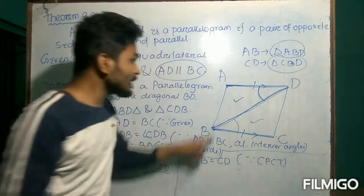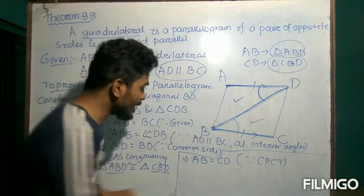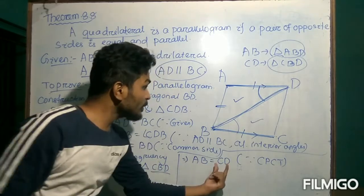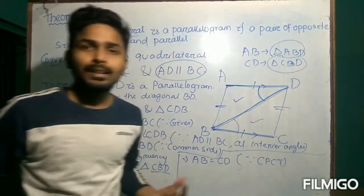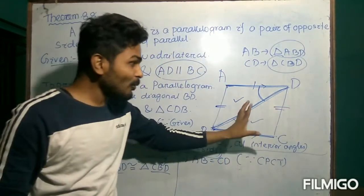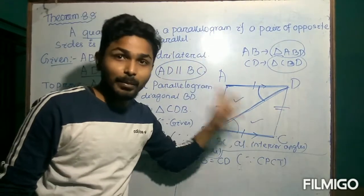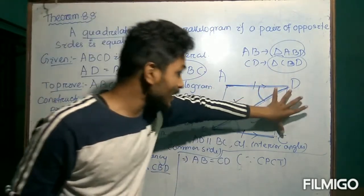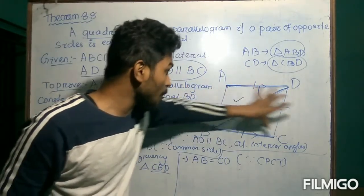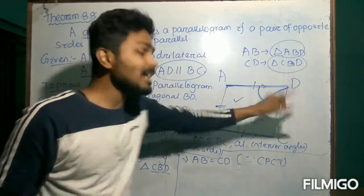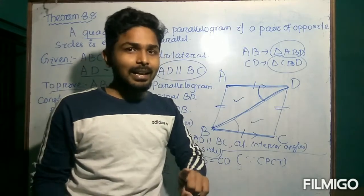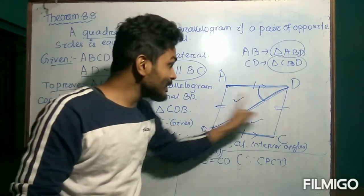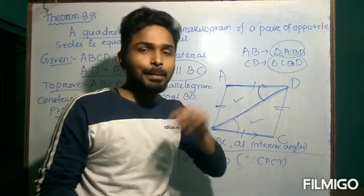We have proved that side AB is equal to side CD. So we have confirmed the first part — that this pair of opposite sides are equal. Now, second, we have to prove that these two sides AB and CD must also be parallel.